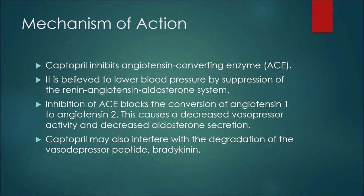The first thing to discuss is the mechanism of action or how this medication works. Captopril inhibits angiotensin converting enzyme or ACE. It is believed to lower blood pressure by suppression of the renin-angiotensin-aldosterone system. Inhibition of ACE blocks the conversion of angiotensin 1 to angiotensin 2, which causes decreased vasopressor activity and decreased aldosterone secretion.